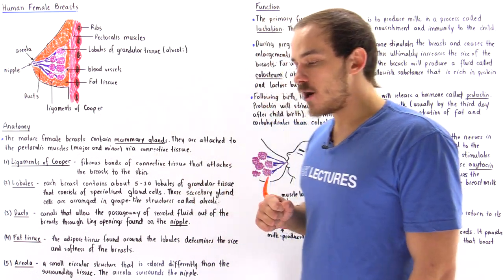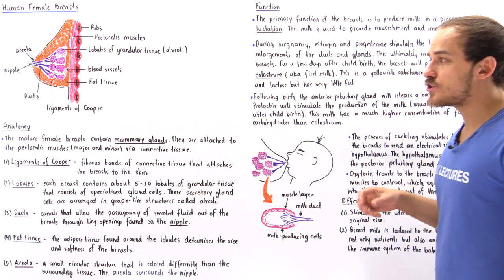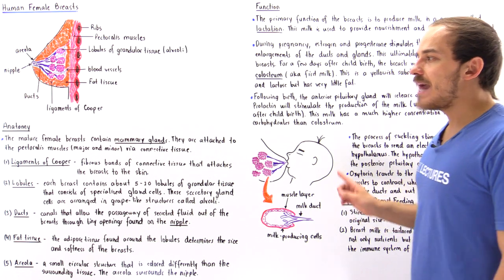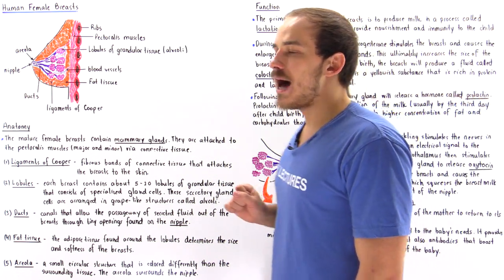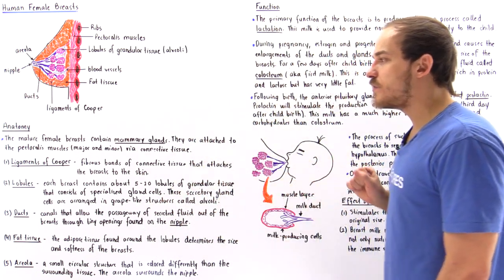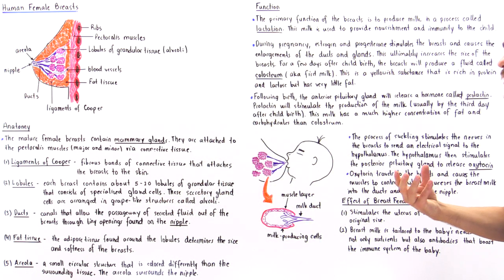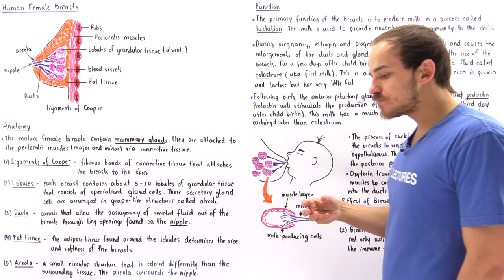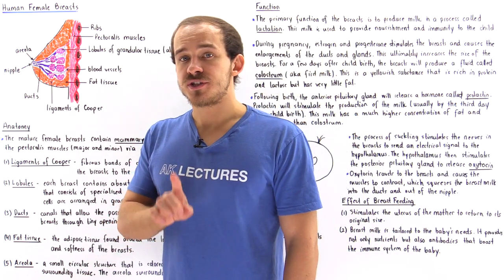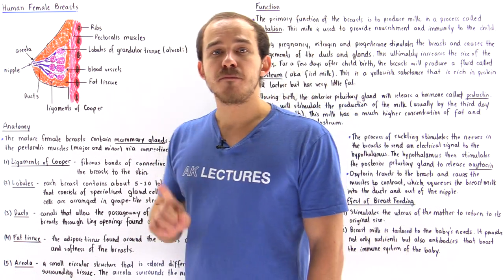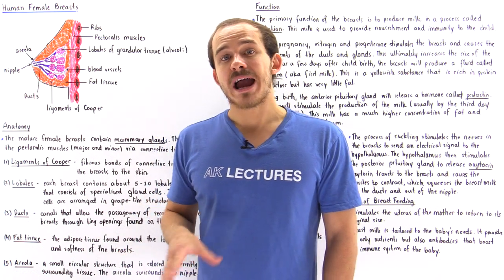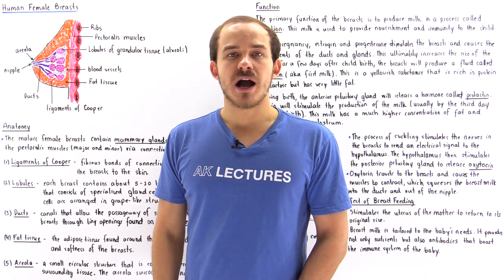The second, perhaps more obvious, function of breastfeeding is that it provides nutrients to the growing child. It also provides antibodies that boost the child's immunity, giving the child passive immunity and increasing the likelihood that pathogens invading the child will be detected and killed off before actually causing infection.